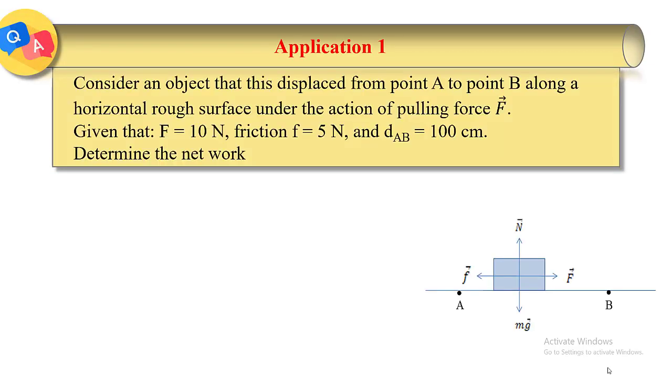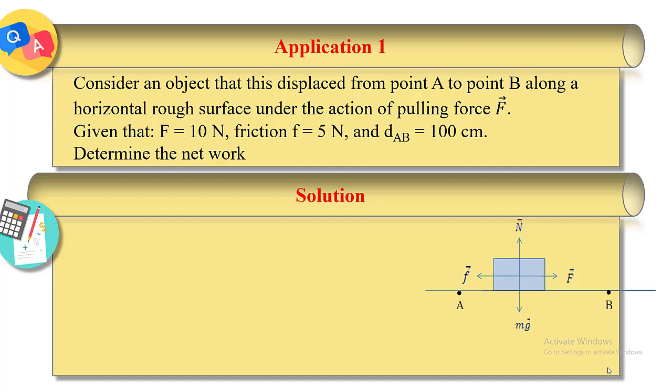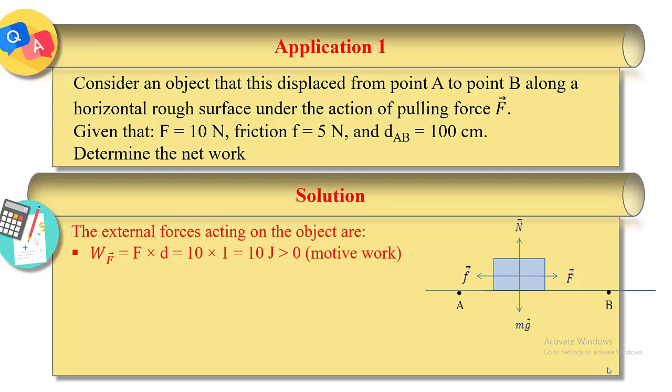Let's solve the first application. We have an object displaced from point A to point B along a horizontal rough surface under the action of a pulling force. We have to determine the net work, or the sum of work of all external forces. First, we determine the external forces and draw them on a free body diagram. We have four forces: the pulling force directed in the direction of motion, the friction force directed opposite to the motion, and the weight and normal force both perpendicular to displacement AB.